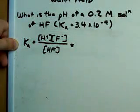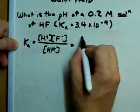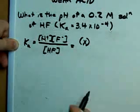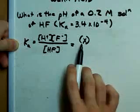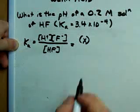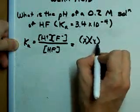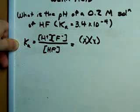We don't know how much of it dissociated yet. We are going to call that amount X. So we're left with X moles per liter of H plus, and we get X moles per liter of F minus as well.